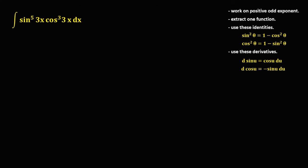For the next given, we again work on the positive odd exponent. In this case, we need to work on the smaller positive odd exponent, so we work on cos³(3x). Bring down sin⁵(3x), then extract one function from cos³(3x), giving cos²(3x) times cos(3x) dx.